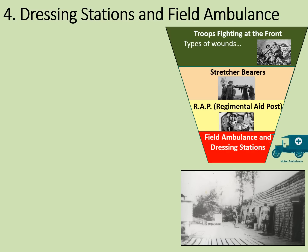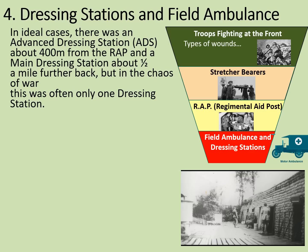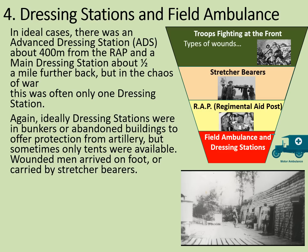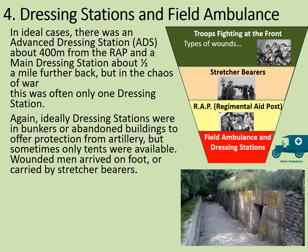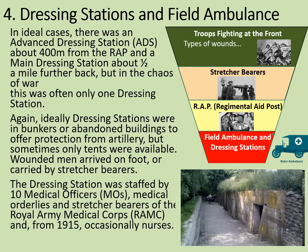The dressing station and field ambulance will be dealt with together here — bear in mind that 'field ambulance' does not necessarily refer to a vehicle. In ideal cases, there was an advanced dressing station, or ADS, about 400 metres from the RAP, and the main dressing station about half a mile further back. But in the chaos of war, there was often only one dressing station to deal with everything. Ideally, dressing stations were in bunkers or abandoned buildings to offer protection from artillery, but sometimes only tents were available. The dressing station was staffed by 10 medical officers (MOs), medical orderlies, and stretcher bearers of the Royal Army Medical Corps, or RAMC. From 1915, occasionally there would be nurses at these too. This is Essex Farm Dressing Station outside Ypres, which became famous as the venue at which John McRae wrote the 'In Flanders Fields' poem.